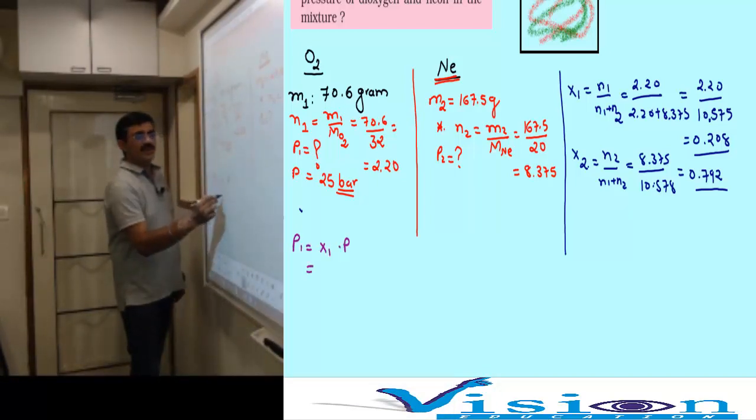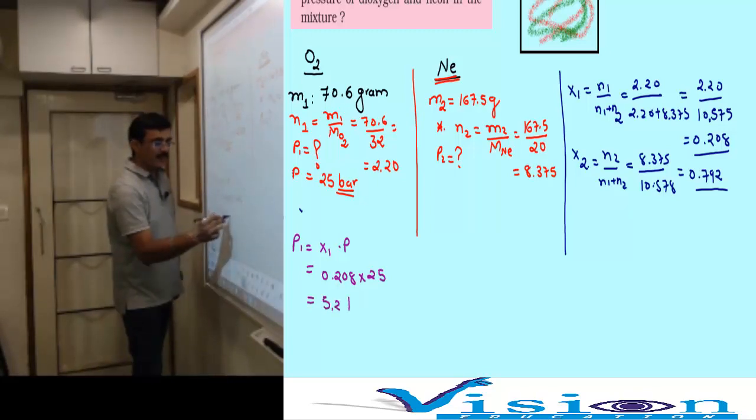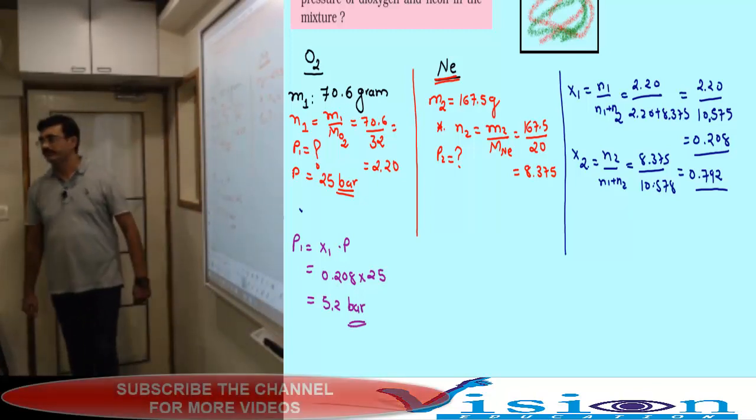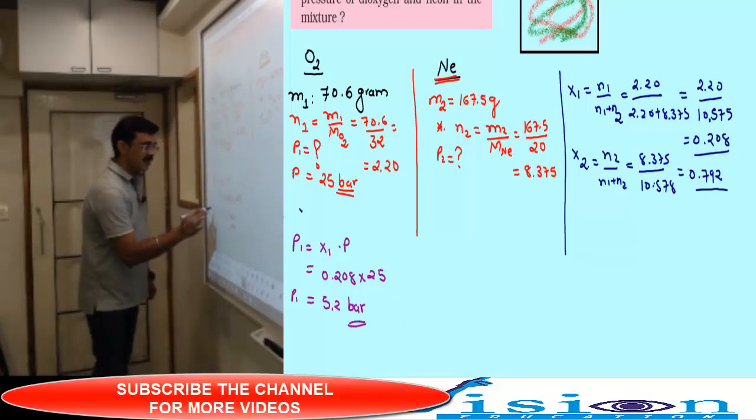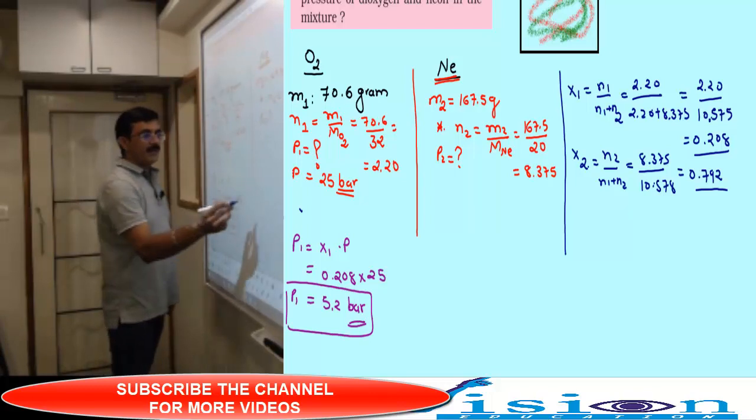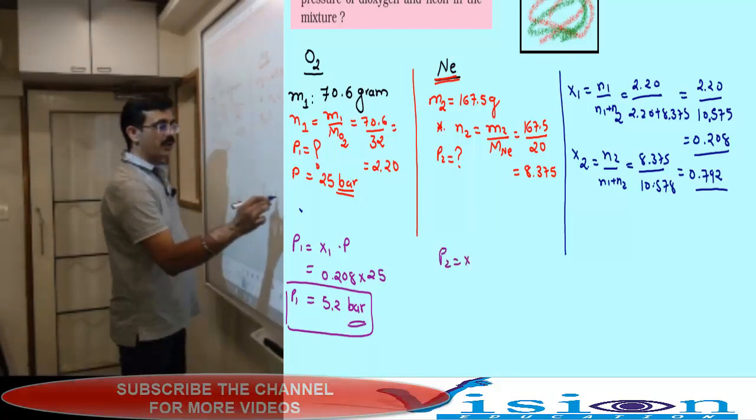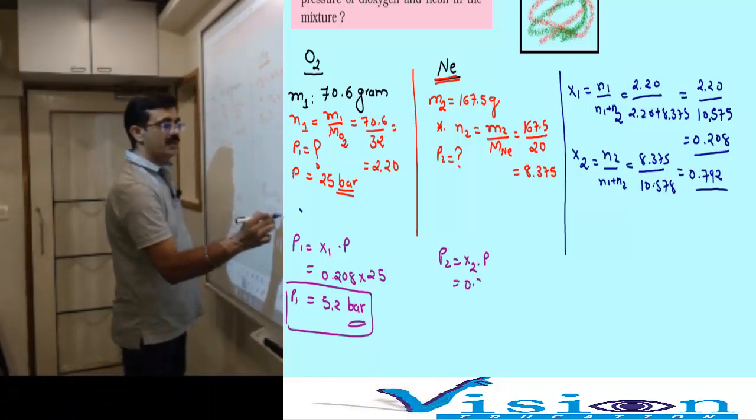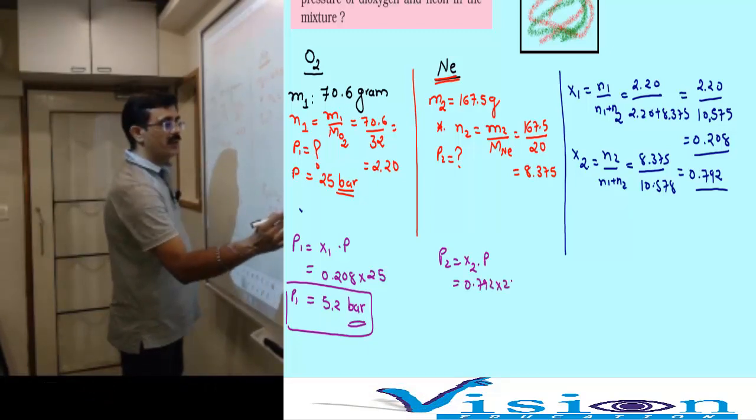After getting x1 and x2, we can find p1. p1 equals x1 into p total, which is 0.208 into 25 bar, equals 5.2 bar. And p2 equals x2 into p total, which is 0.792 into 25, giving the final answer.